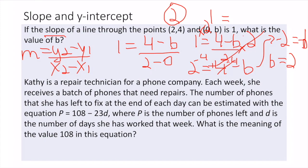A lot of times they give us information and we just have to interpret it. For example: Kathy is a repair technician. Each week she receives a batch of phones to repair. The number of phones left at the end of each day can be estimated with p = 108 - 23d, where p is the number of phones left and d is the number of days she's worked. What is the meaning of 108 in this equation?